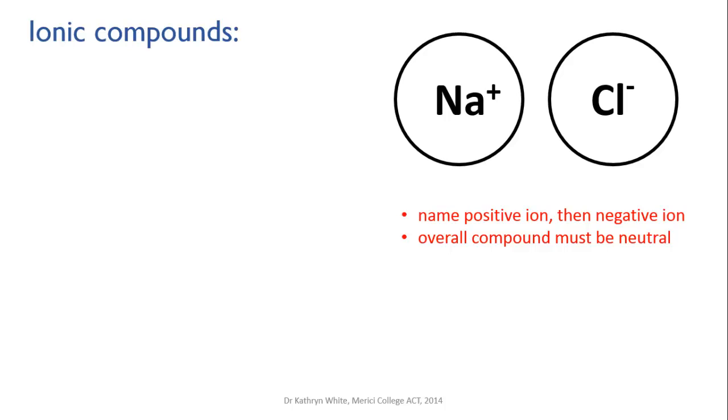To name these compounds the positive ion is always named first and then the negative ion. Let's look at table salt. This is sodium chloride. It's made of the elements sodium and chlorine. We name the positive ion first, in this case it's sodium, and then we name the negative ion next. The element is chlorine, but for a negative monatomic ion, the end of the name is changed to ide. So instead of chlorine we have chloride.